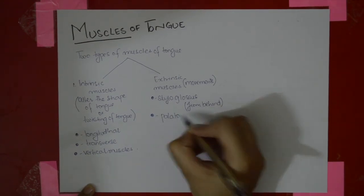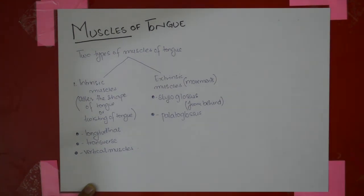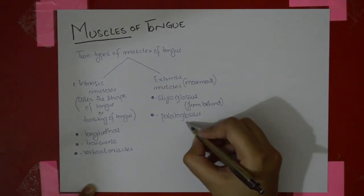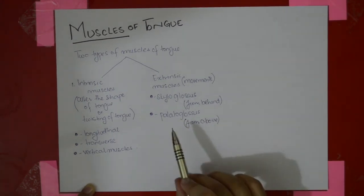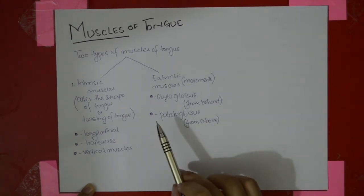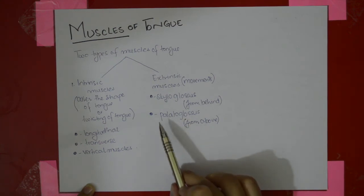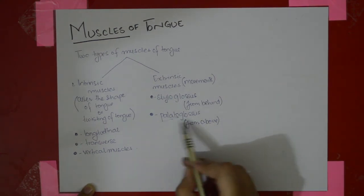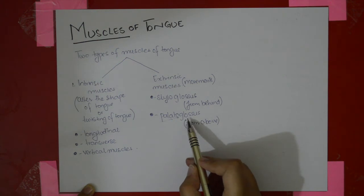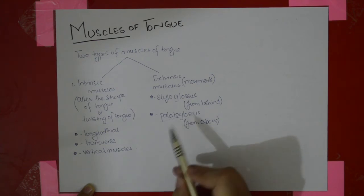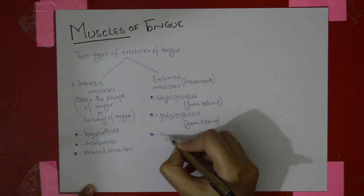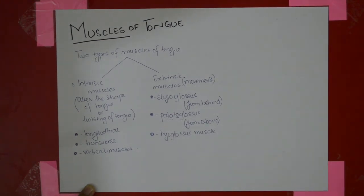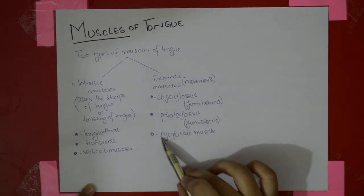The second muscle is the palatoglossus muscle, which comes from above. The palate is above, so the origin is from the palate — specifically the palatine aponeurosis. You can guess it from the name: 'palato' and 'glossus.' It descends in the palatoglossal arch to the side of the tongue at the junction of the oral and palatoglossal part. Then there is the hyoglossus muscle, which originates from the hyoid bone — from below, as the hyoid bone is below.